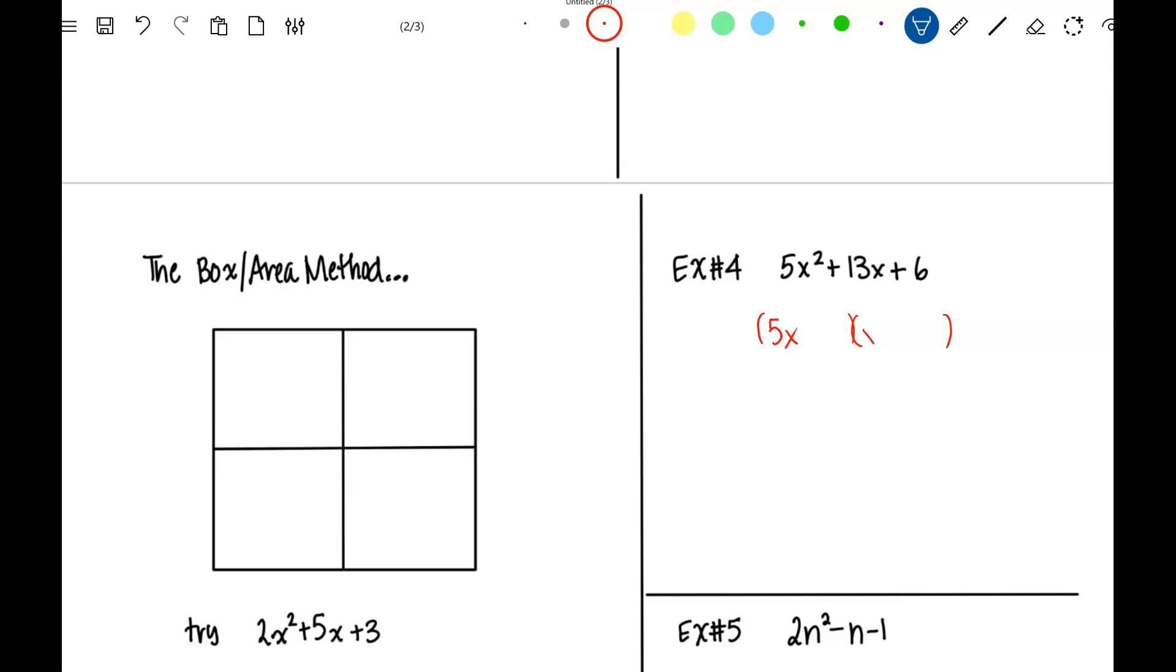5x squared is 5x times x. 6 can be 1 times 6 or 2 times 3, or 3 times 2, which that's what it is. It's 3 times 2. Signs are the same, both positive. We're going to check. Inside product is 3x, outside product is 10x. Combine those together and you get 13x. So that is what we want.